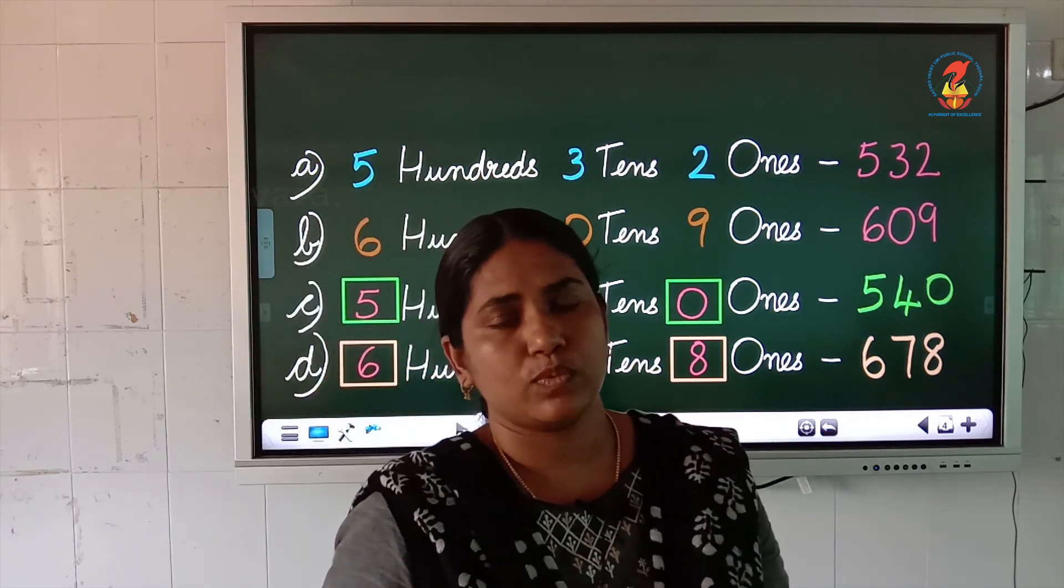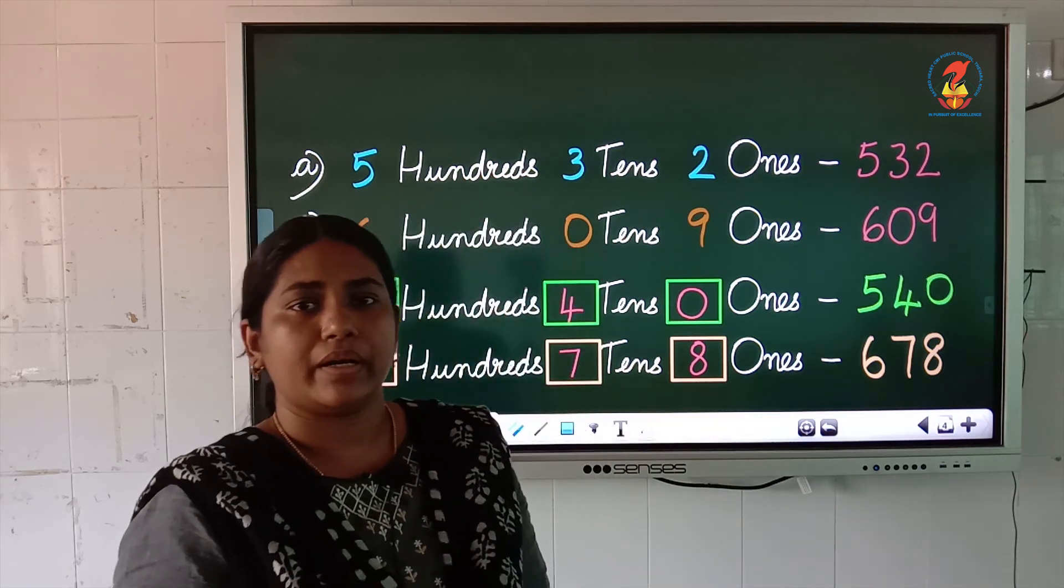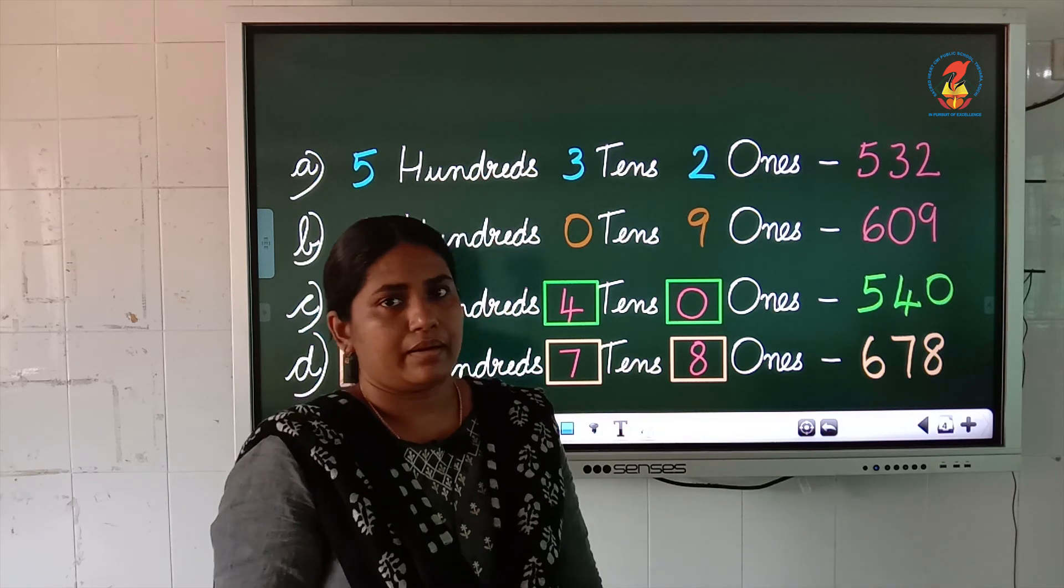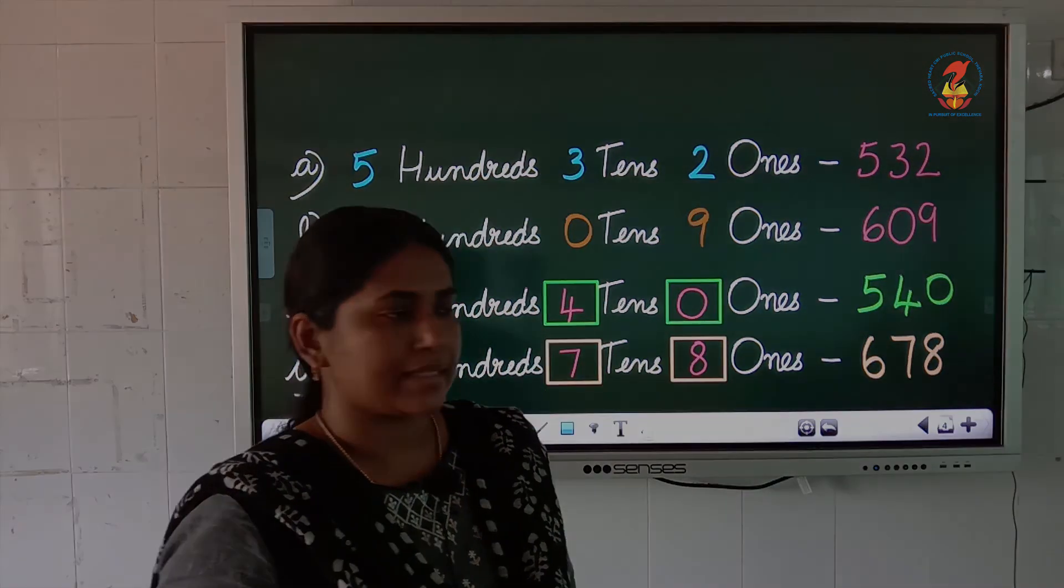So, all of you revise these lessons well. The numbers from 501 to 700. Okay children? Hope you will see in the next class.